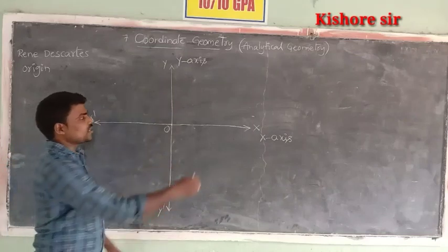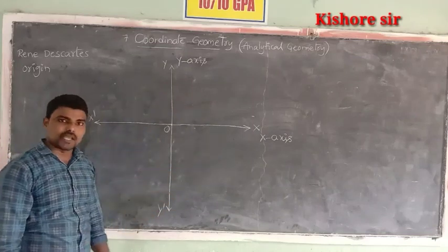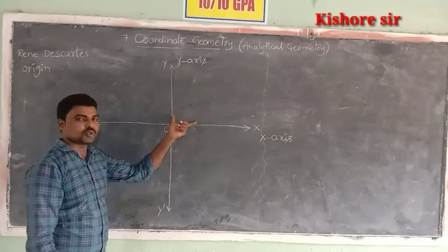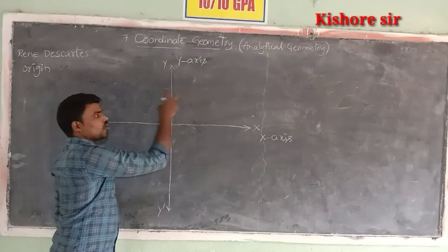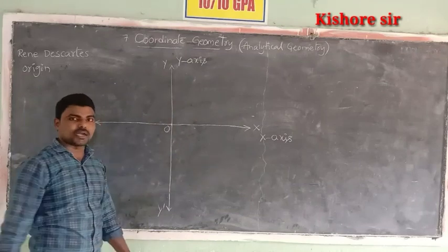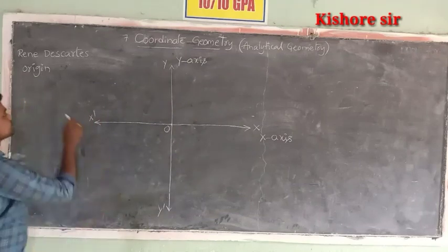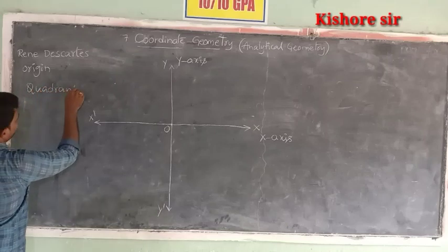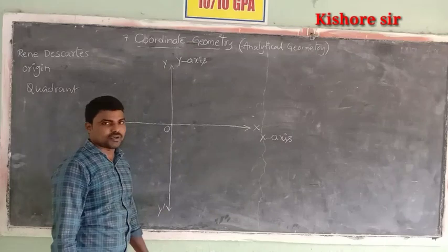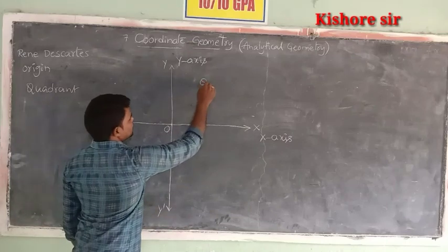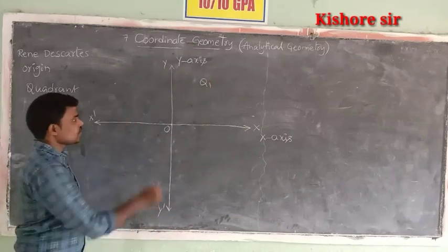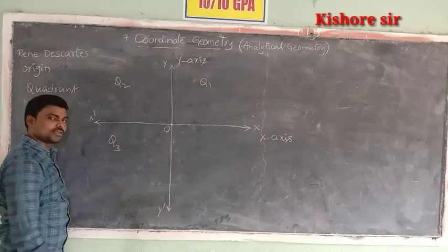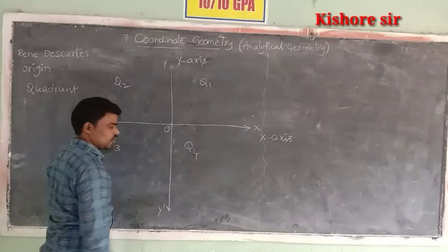These two axes divide the plane into four equal parts. Each part is called a quadrant. Taking the anticlockwise direction: this is Quadrant 1 (Q1), Quadrant 2 (Q2), Quadrant 3 (Q3), and Quadrant 4 (Q4).